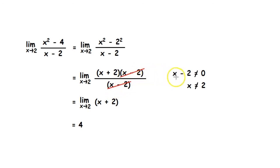We must mention here that x - 2 is not equal to 0. This means that x is not equal to 2. So after that using direct substitution, we can get our final answer 2 + 2, that is 4.